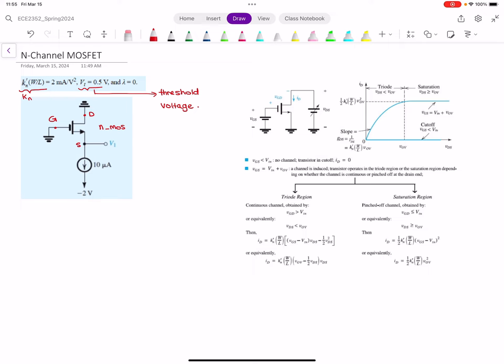What we need to know first is to see if we can figure out what region our transistor is operating at. By that, I mean if we are in the cutoff region, triode region, or saturation region. For each of these regions, we have a different formula for the drain current.